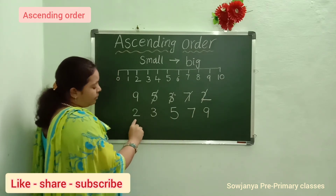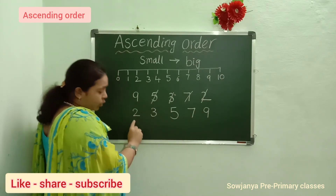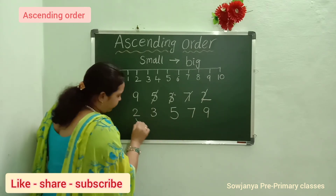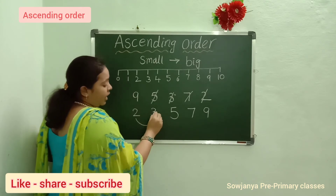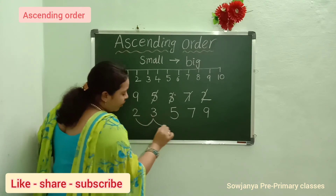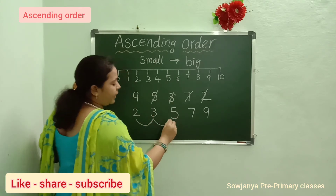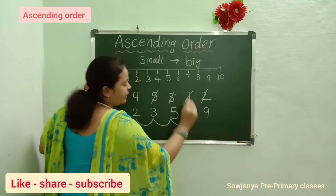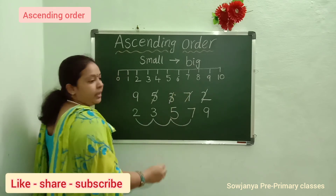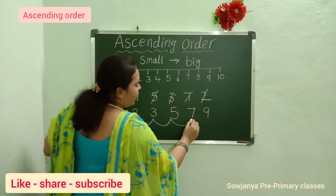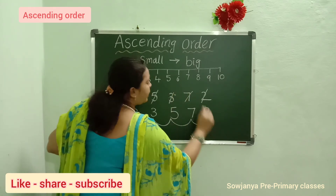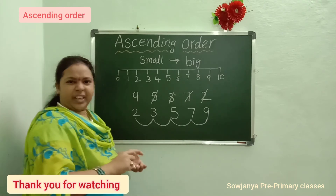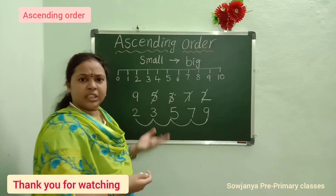2 is the small number. After 2, 3 is the big number. After 3, 5 is the big number. After 5, 7 is the big number. After 7, 9 is the big number. So it is very easy, you know.